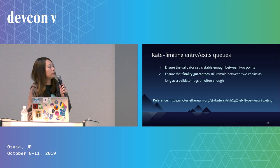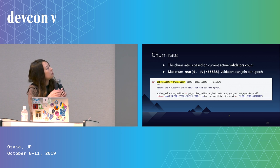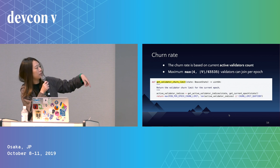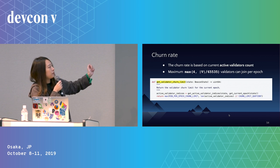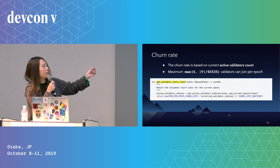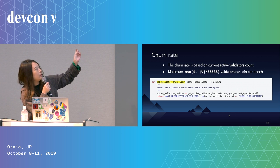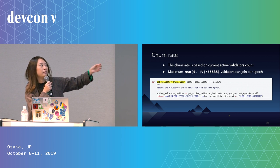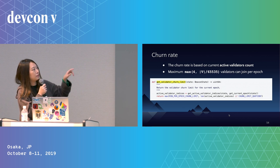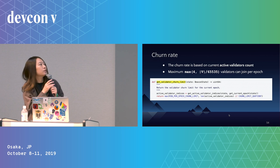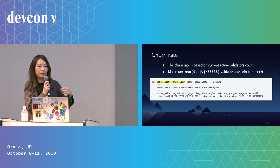Here's the churn rate function. For each epoch, the maximum number of validators that can join or exit is defined based on the current active validator count. The churn rate quotient is set to about 65,536. So you can estimate how many validators can join or exit at the same time.